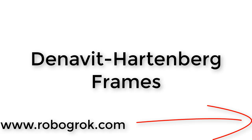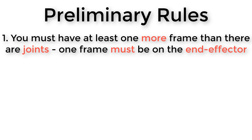Before we look at the four Denavit-Hartenberg frame rules, there are a couple of preliminary rules. First, remember that we need a minimum of one frame for every joint plus one frame on the end effector. It is okay to have more frames, and sometimes it can be very useful, but you can't have less. For example, if your kinematic diagram has three joints, you need at least four frames; if it has five joints, you need at least six frames.